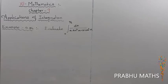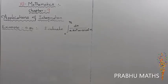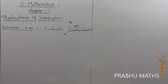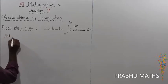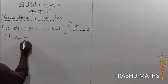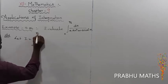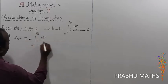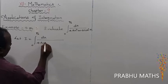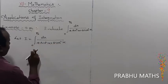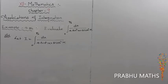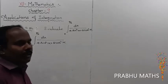Example 9.36: Evaluate the integral from 0 to pi/2 of dx divided by 4 sin²x plus 5 cos²x. Let us consider I is equal to the integral from 0 to pi/2 of dx divided by 4 sin²x plus 5 cos²x. This is called a proper integral or normal integral.